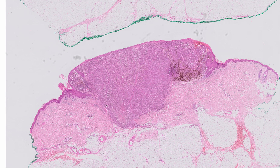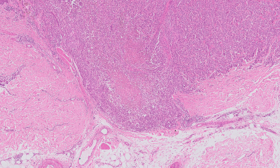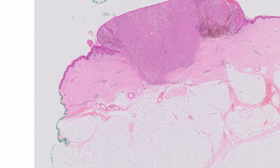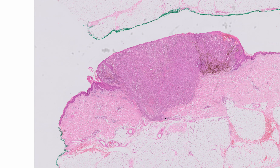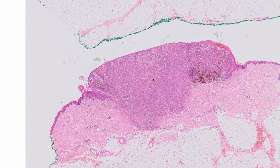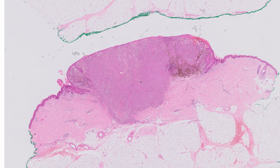This is an example of a nodular melanoma. The Breslow thickness was measured from the deepest melanoma cell to the overlying epidermis, and was more than 4 mm, with ulceration present. Staging was therefore pT4b in this case.